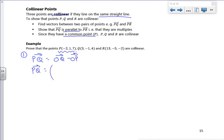So O to Q is 3, minus 1, 4. O to P is minus 2, 1, 7. So P to Q is 5, minus 2, minus 3.